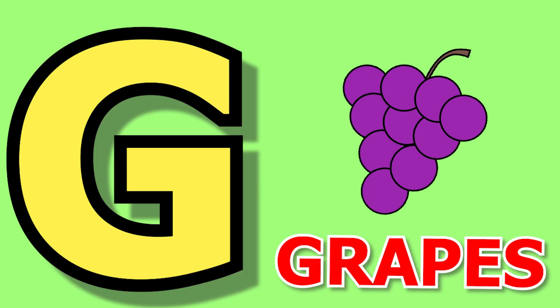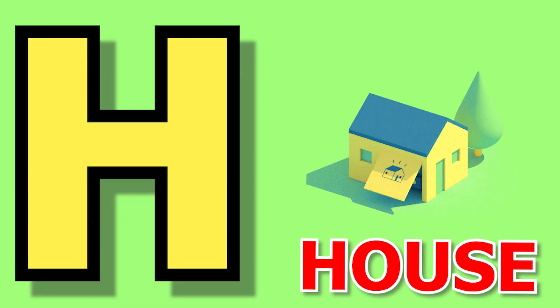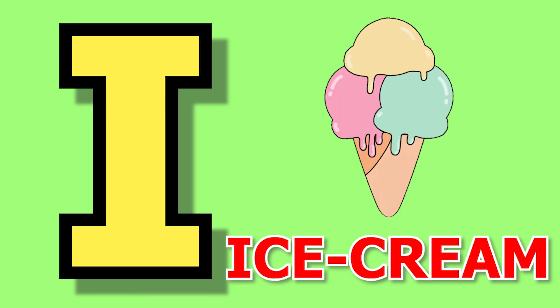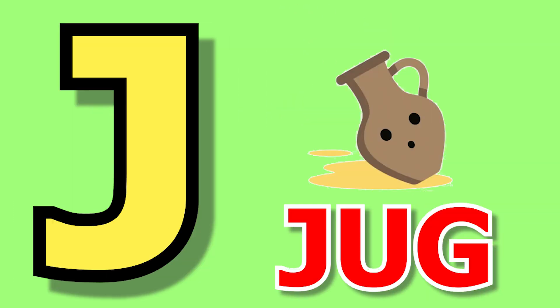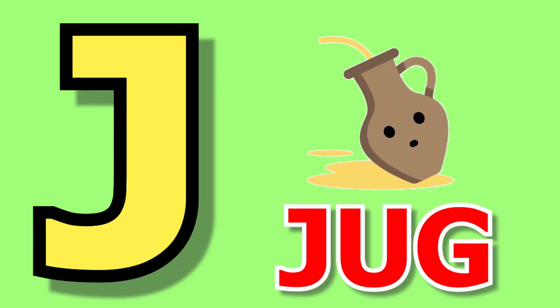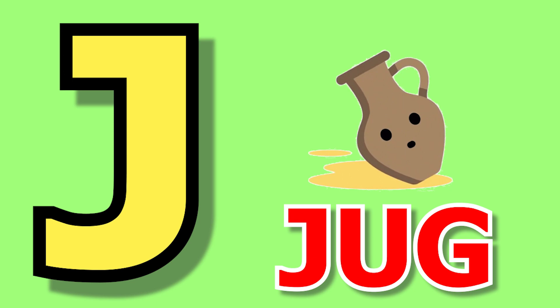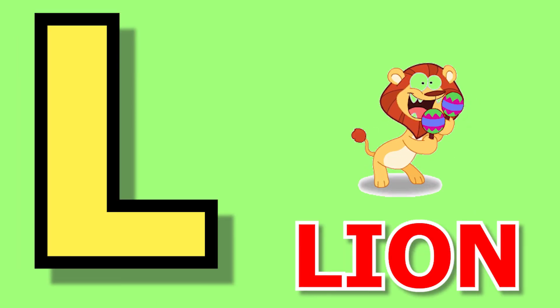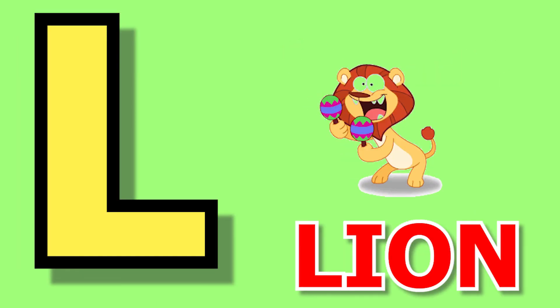G for grapes, H for house, I for ice cream, J for jug, K for kite, L for lion.